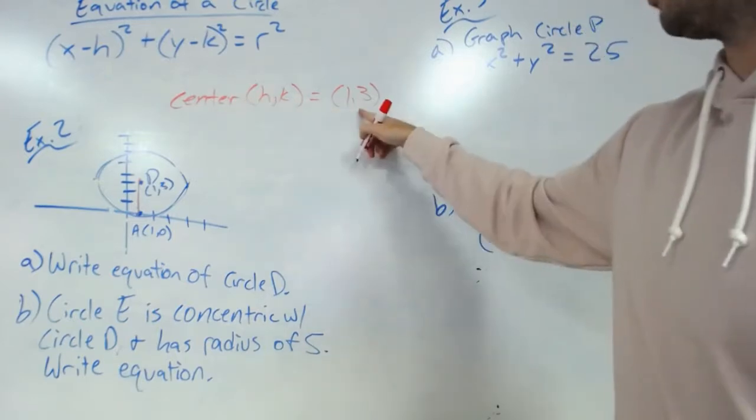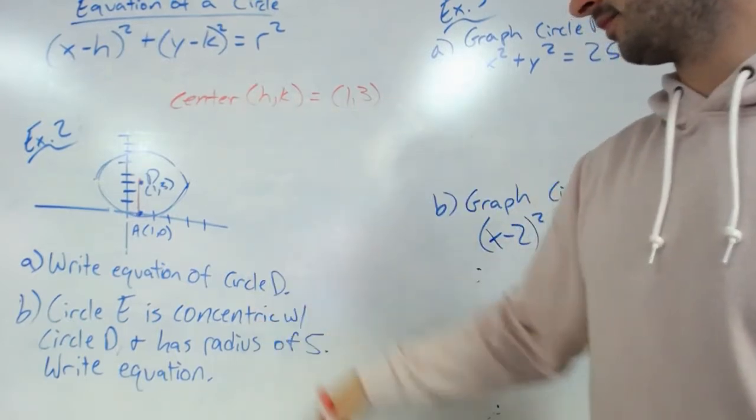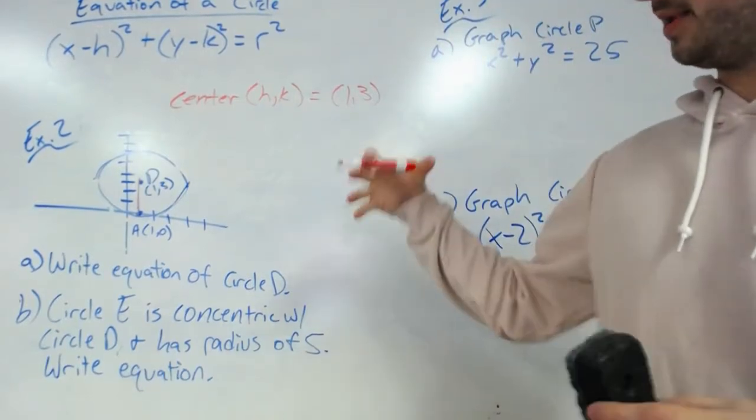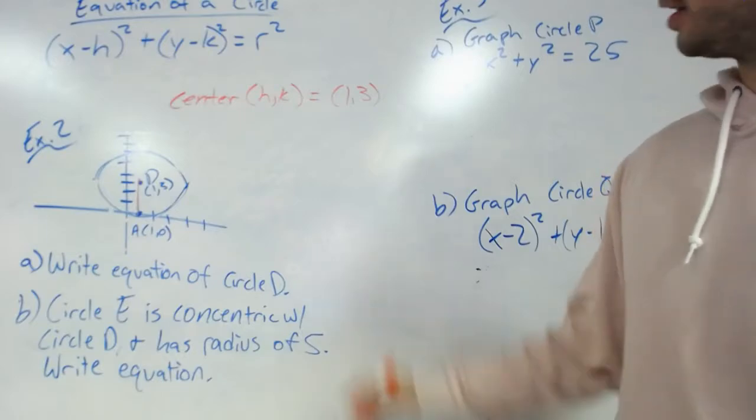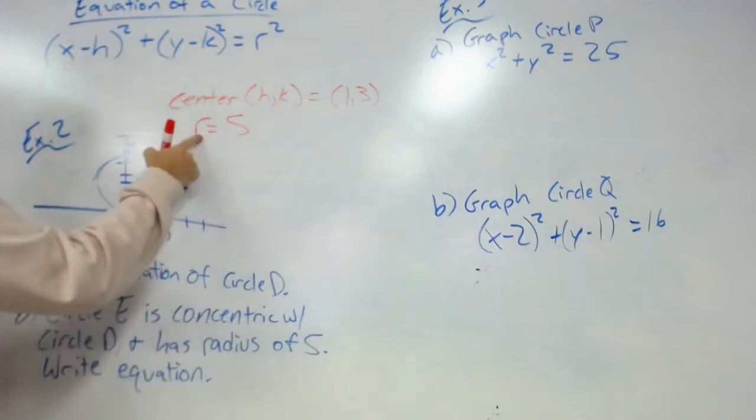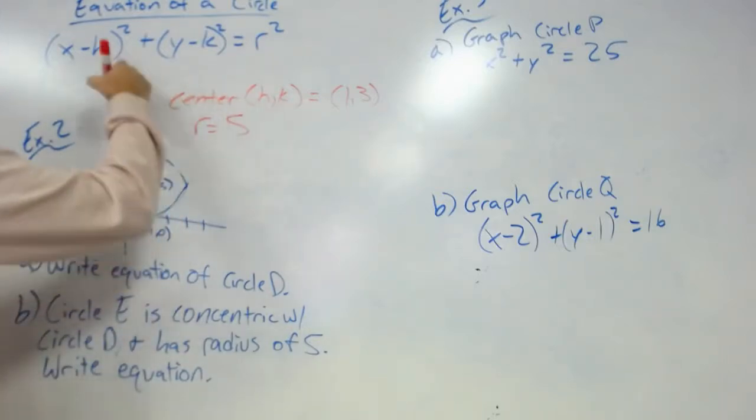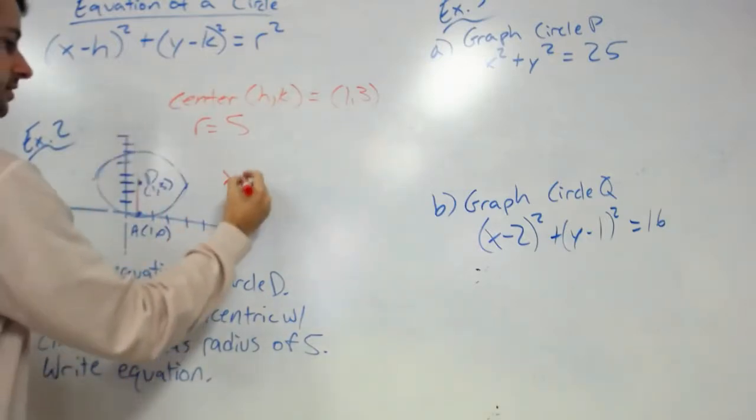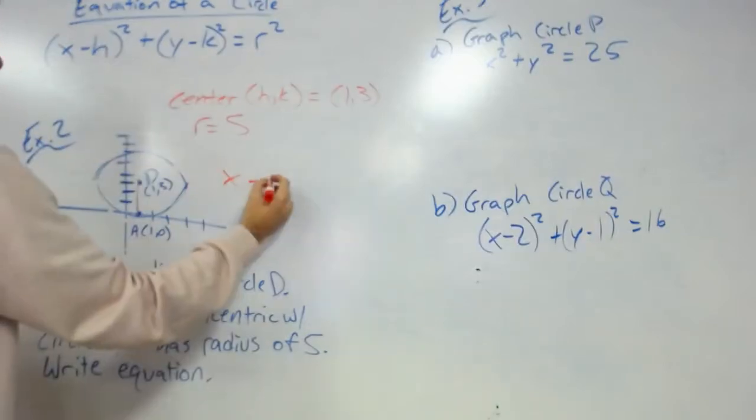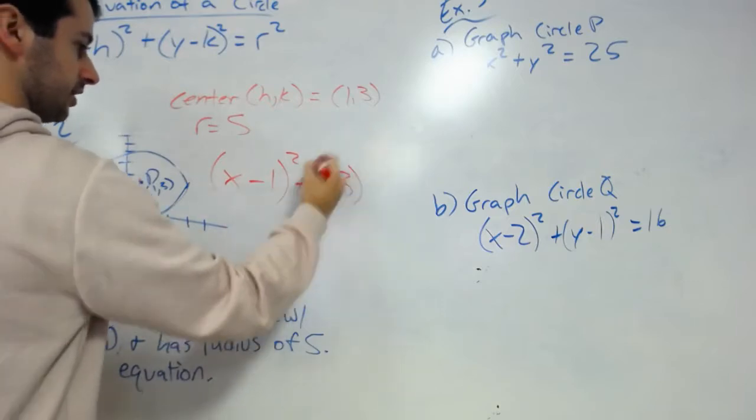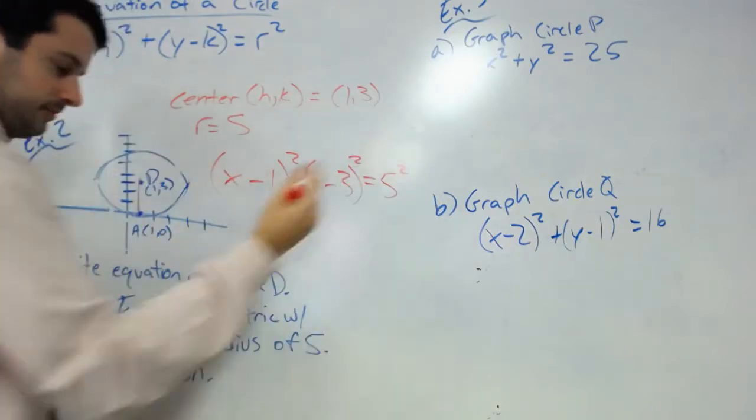It says it has a radius of 5, so we have a bigger circle. We don't need to know any of the coordinates, but we can plug into our formula: x minus 1 squared plus y minus 3 squared equals 5 squared, or 25. That would be your equation for circle E.